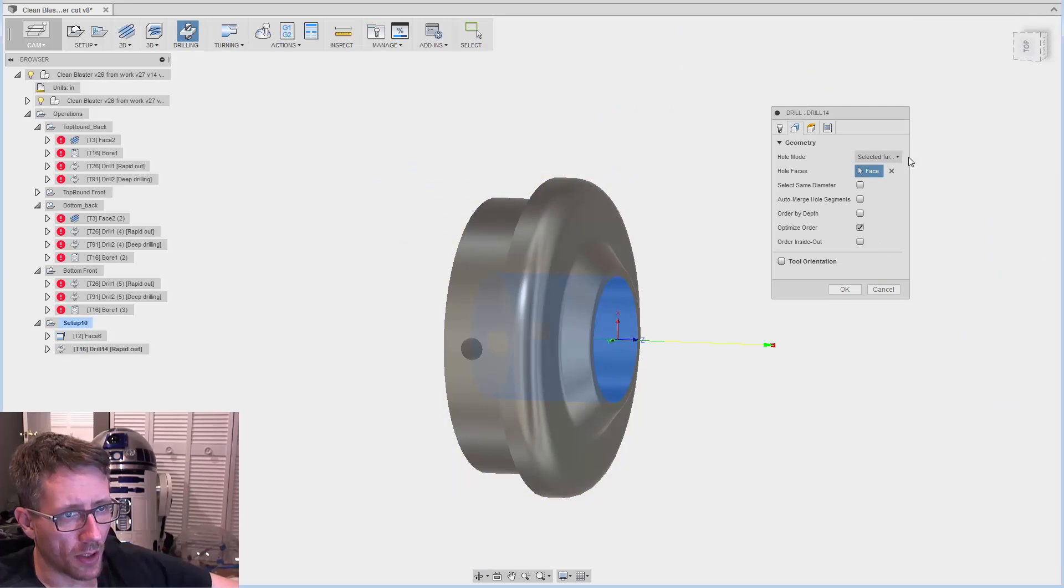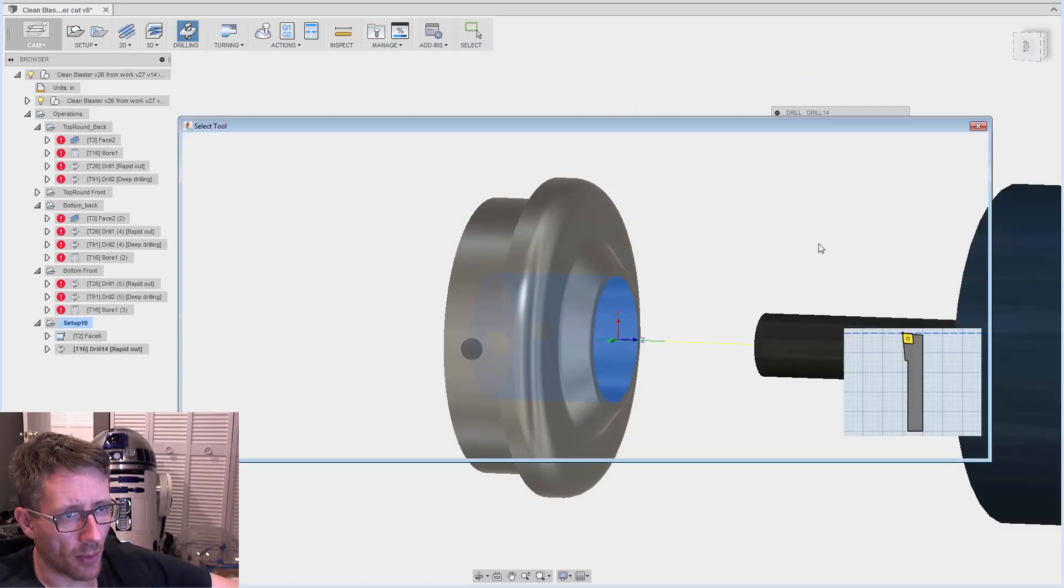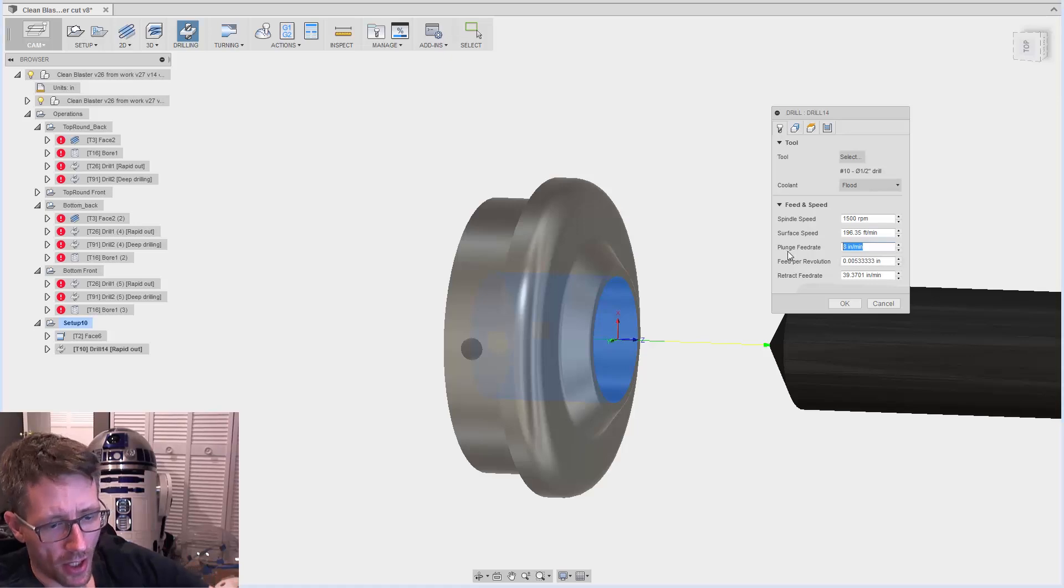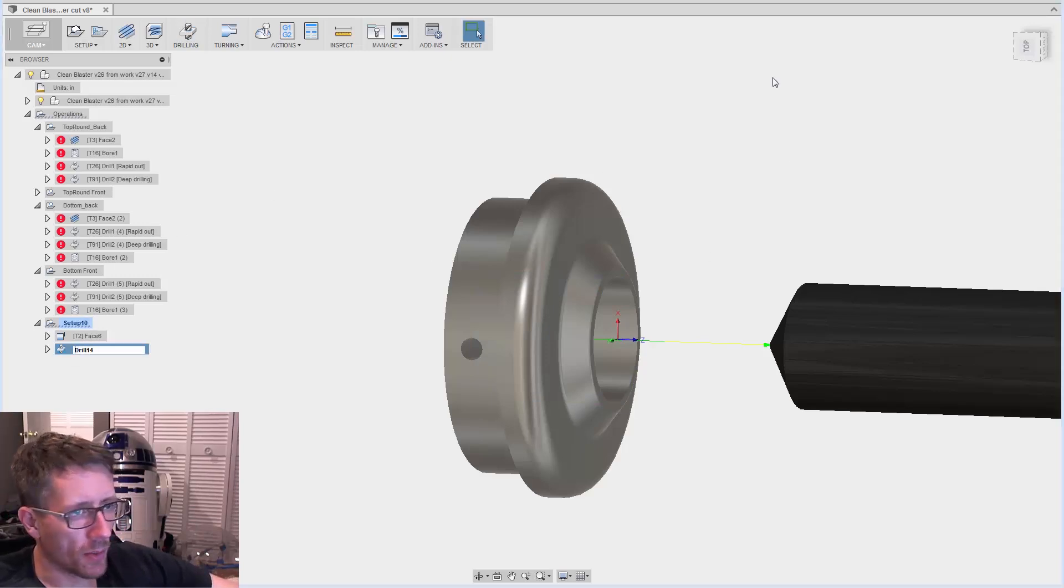Next, I'm going to drill. Choose the face you want to drill. We're going to grab a half inch drill. I'm going to slow this down a little bit because I'm not holding the tool very securely at all.